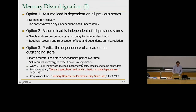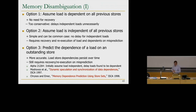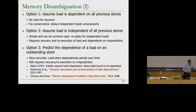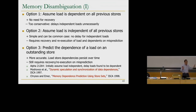Option three is the intelligent option: predict the dependence of a load on an outstanding store. This was actually the subject of a prominent legal battle between a university and several companies over patented memory disambiguation work. Load-store dependencies persist over time — if a store writes to a location a load reads, and you're in a loop, it happens again and again, so you can learn from past executions. The Alpha 21264, for example, initially assumes a load is independent; if it turns out to be wrong, the next time it assumes dependence. So it basically learns over time.